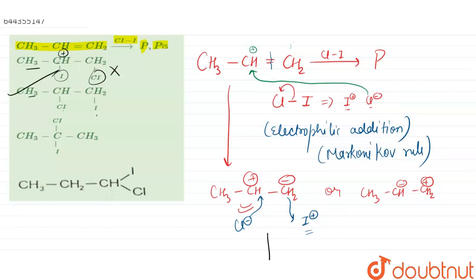Third one is CH3-C-CL-I. No, this is incorrect. And fourth option is also incorrect. So the product P is option number 2. Thank you.